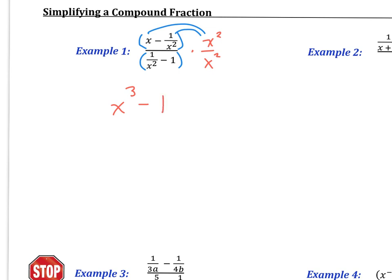When I do the same thing to the denominator, the x squared is the same thing as x squared over 1. So the x squareds are essentially going to cancel out, and I'm going to be left with 1. Then when I distribute the x squared to the 1, I get minus x squared.